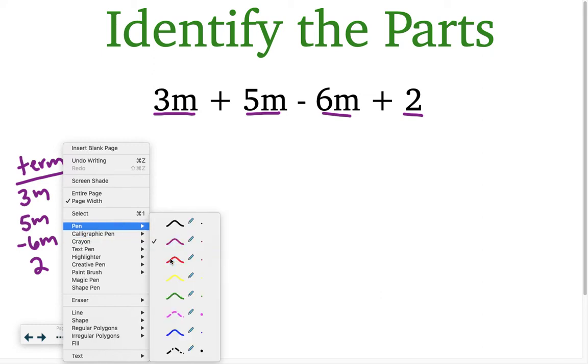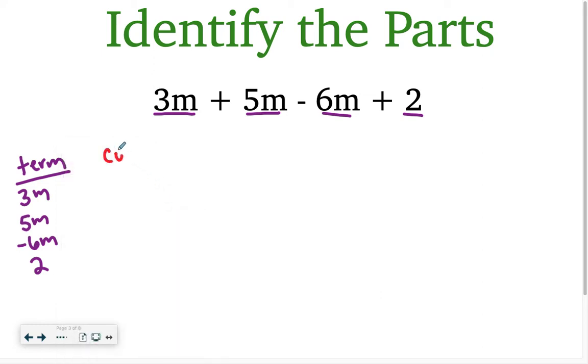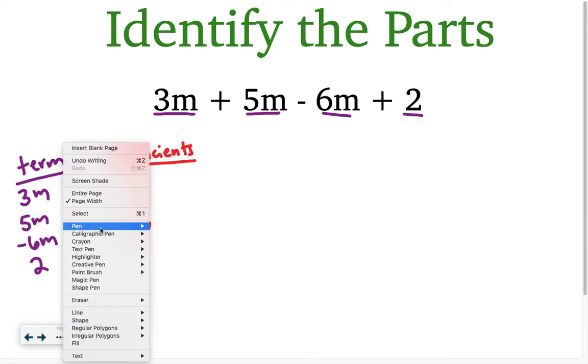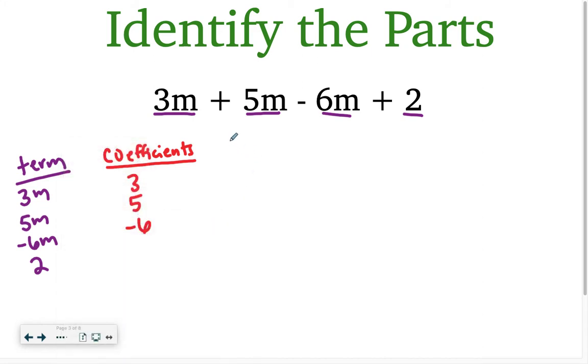Then I'm just going to change colors quick. And let's talk about what are the coefficients. So remember, coefficients are the numbers with a variable. So 3 is a coefficient, but you never write the variable. So 3, 5, and negative 6 are all coefficients. And then let's talk about like terms. So our like terms would be anything with an M in this case. So 3M, 5M, and negative 6M.